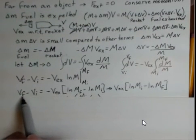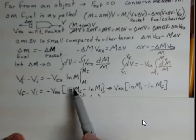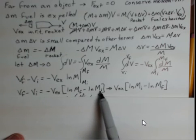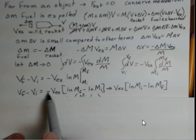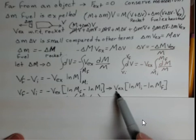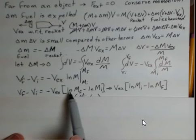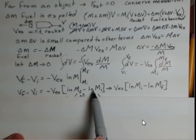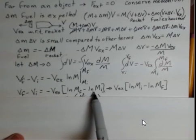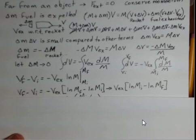So still v final minus v initial on the left, minus v exhaust, and now putting in the upper limit, natural log of mass final, minus the evaluation of the lower limit. And I'm going to incorporate the minus sign that's out in front here, inside the square bracket. So now a plus v exhaust, and the signs have changed. So distributing minus one through the square bracket, this becomes minus log of m sub f, and minus a minus natural log of mass initial makes that a positive term.